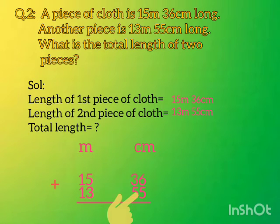We will add the centimeters: 5 plus 3 equals 8, 1 plus 1 equals 9, giving us 91 centimeters. For meters: 5 plus 3 equals 8, 1 plus 1 equals 2, giving us 28 meters.